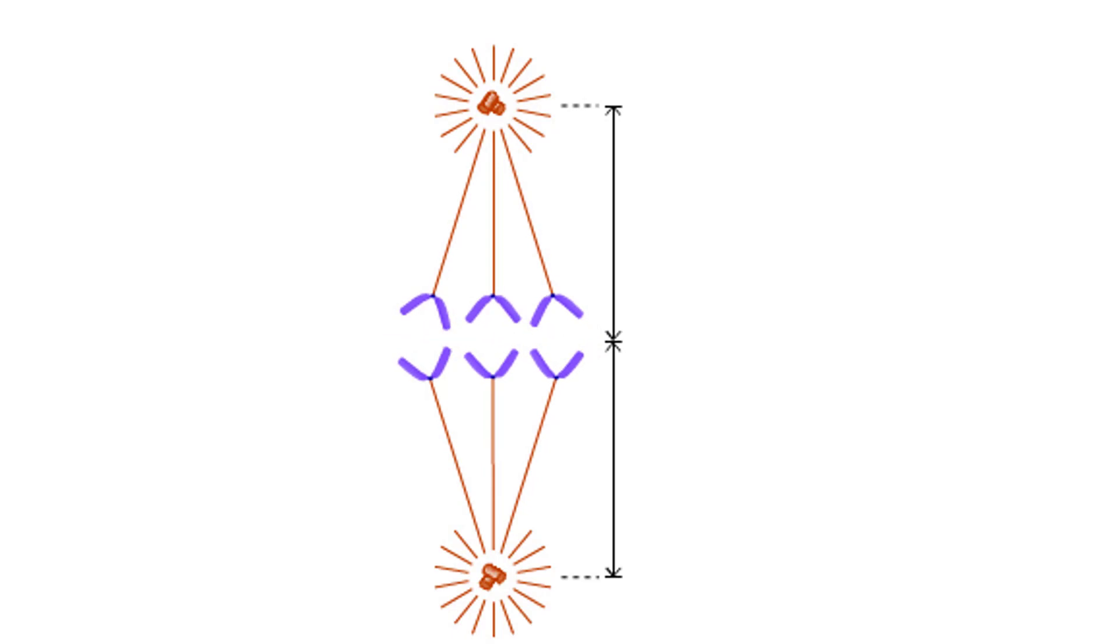At anaphase, sister chromatids separate and are pulled to opposite poles of the cell. During this chromosomal movement, the kinetochore microtubules become progressively shorter.